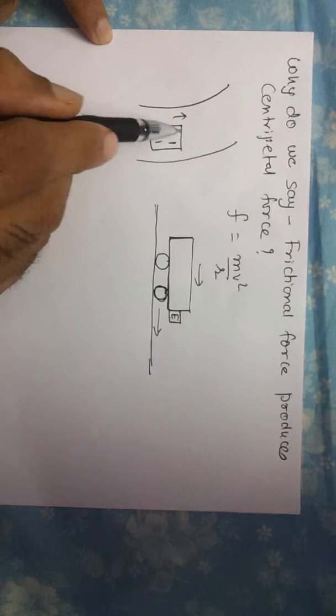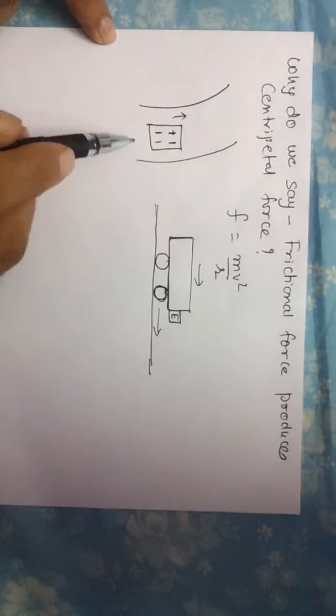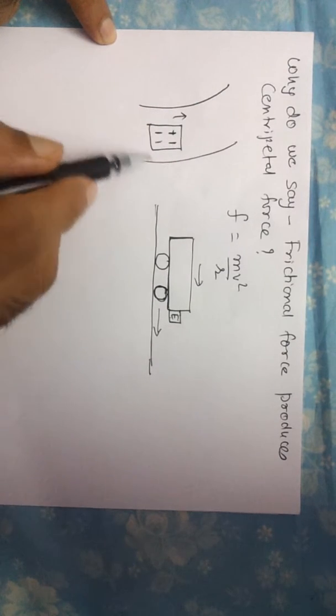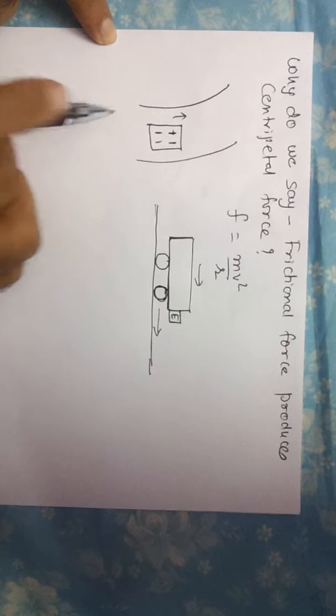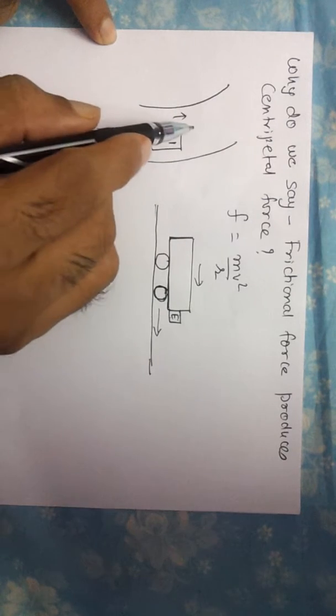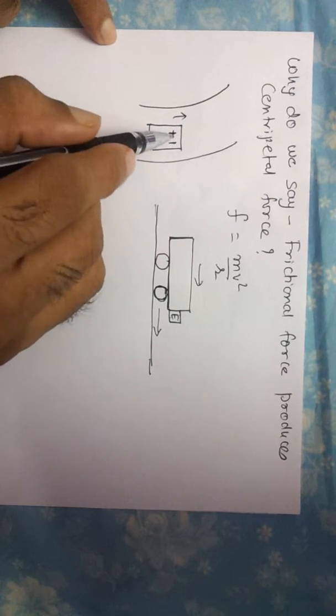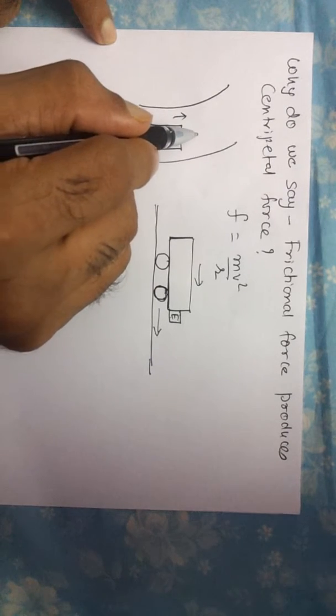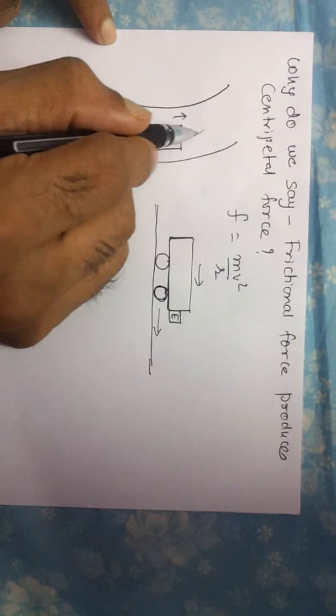Let's say this vehicle is moving in this direction and wants to take a turn. If this road were completely frictionless—for example, made of ice—the friction would be extremely negligible. In that situation, when the driver tries to turn, the vehicle would not be able to take the turn. It would tend to move in a straight line because there's no friction.